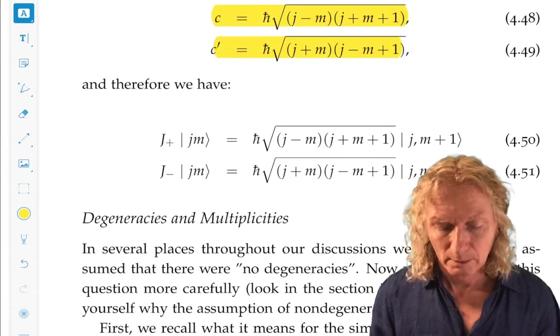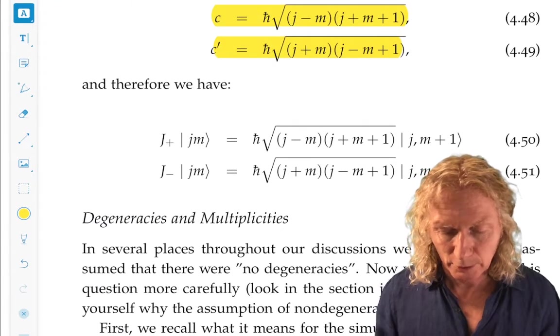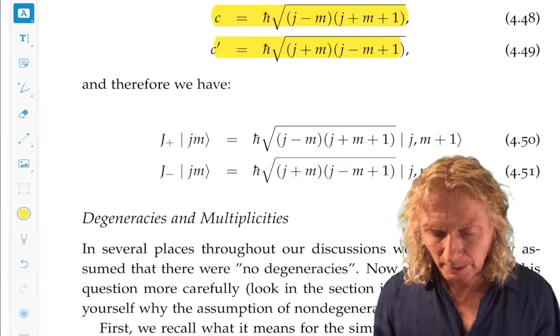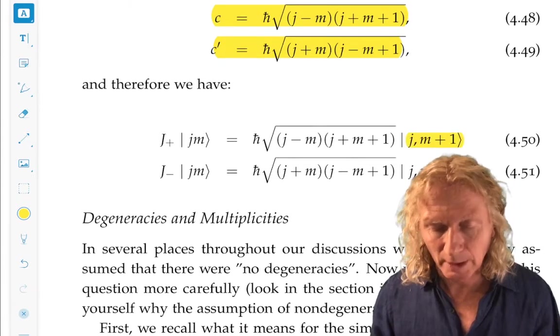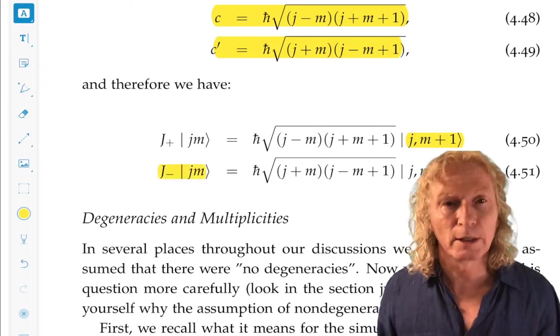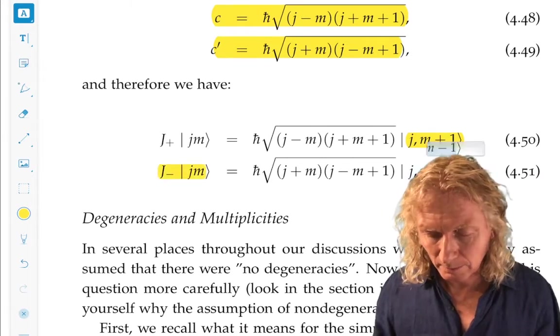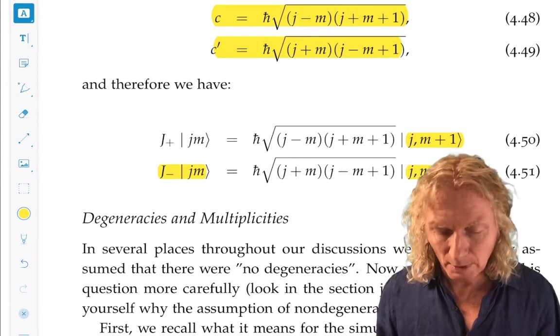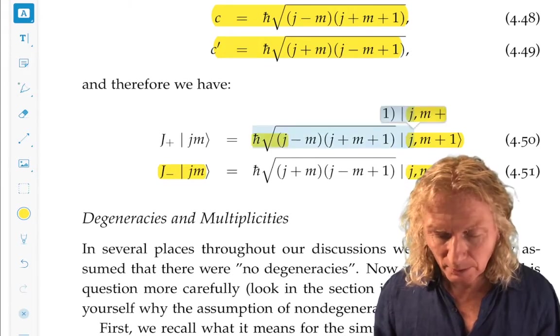And so J plus acting on Jm, the ket on the right is ket J m plus one. J minus acting on ket Jm is the ket on the right, Jm minus one, multiplied by these real numbers.